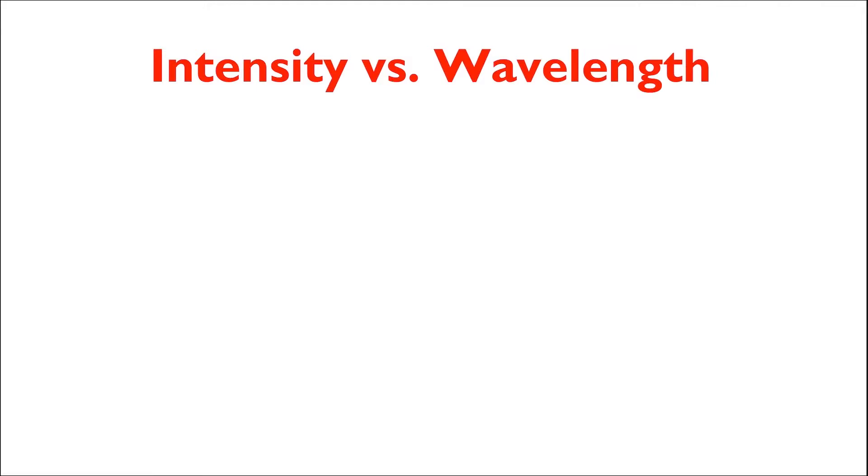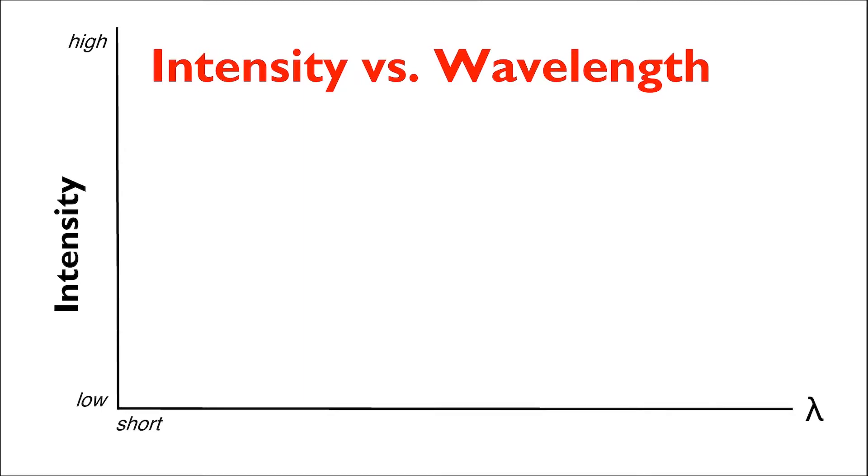To measure this on a graph, well, we need a graph. This graph measures the intensity or the relative brightness of the light on the vertical axis and the wavelength of light on the horizontal axis. We measure low intensity towards the bottom of the graph and high intensity towards the top. Wavelength increases from short to long as we move further towards the right on the graph.